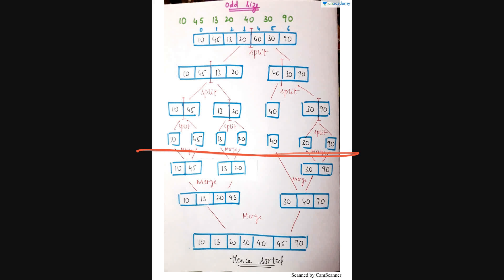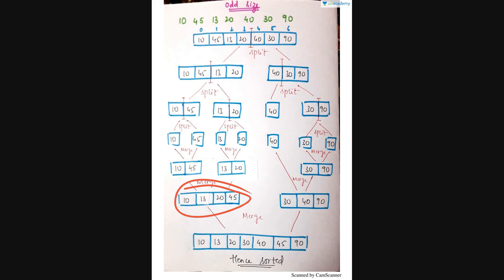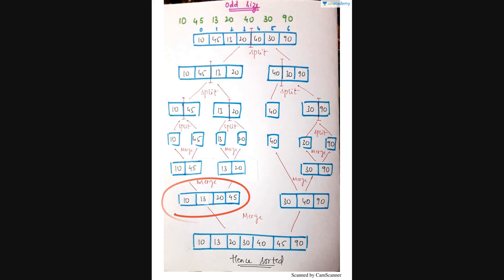Now we enter the merging phase, starting with the left part. We take 10 and 45: the smaller is 10, so first comes 10, then 45. Then 13 and 20: 13 is smaller, so first 13, then 20. Combining these two pairs in order gives us 10, 13, 20, 45 as one sorted part.